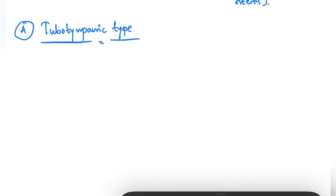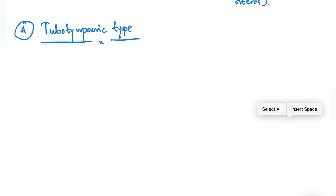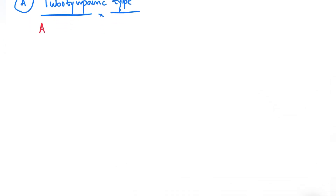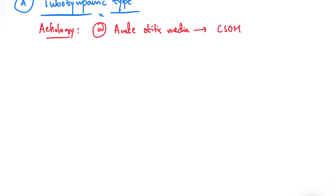We'll begin with the Tubotympanic type, looking at its etiology, pathology, and clinical features. The number one cause is it may be a sequela of acute otitis media, which may progress to become CSOM over time, leaving behind a central perforation.